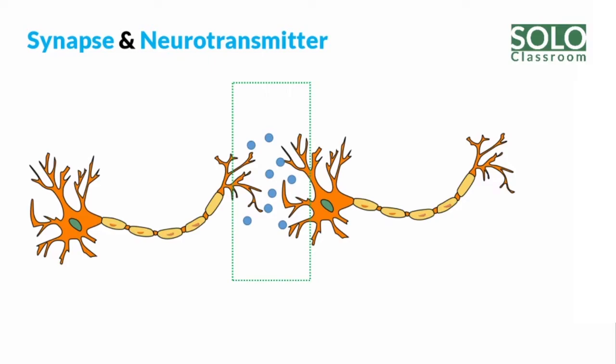We have already covered neurons. Neuron cells are interconnected and we have developed the nervous system. So here you have a neuron.